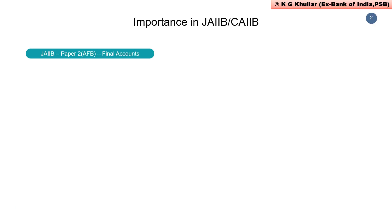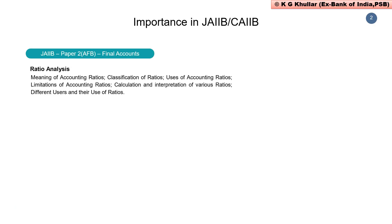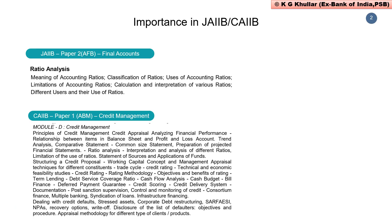In JIB, ratio analysis appears in Paper B, that is Accounting and Finance for Bankers, in Module B under Final Accounts. While in CIB, ratio analysis forms an important part in Paper 1, Advanced Bank Management, under the Credit Management Module. Most students find this topic most difficult. So if you are a JIB candidate, this lecture becomes even more important. If you clear this topic now, it makes your CIB Paper 1 Advanced Bank Management a bit easier, as many questions are asked from ratio analysis.